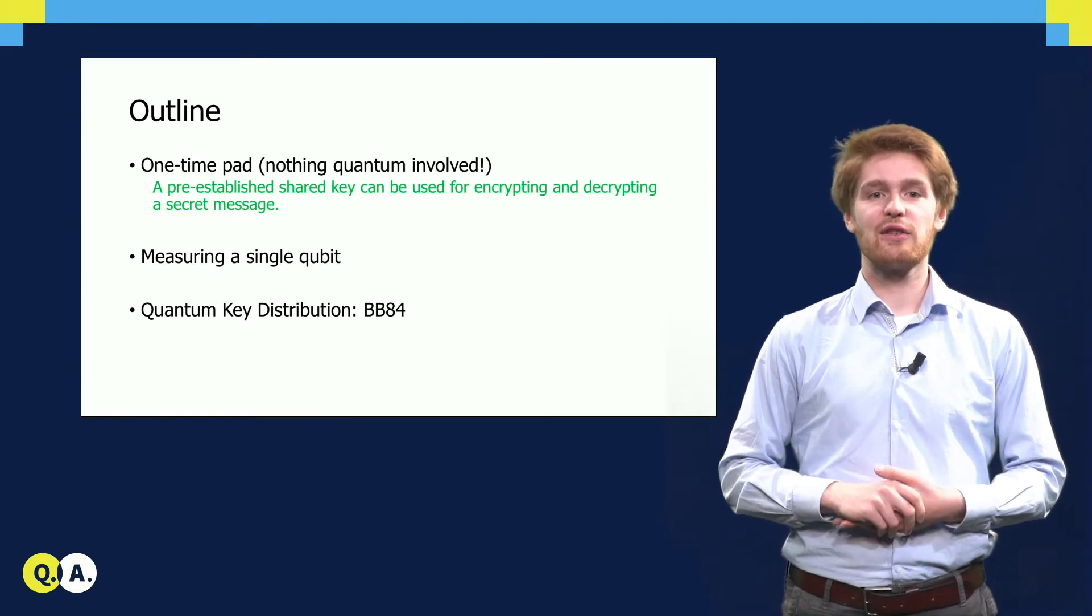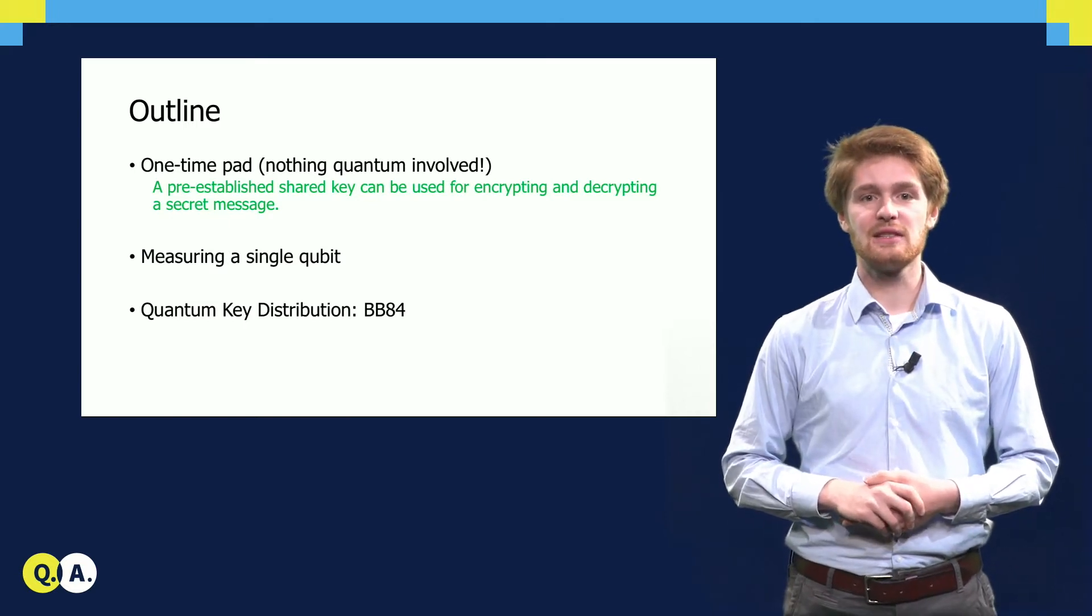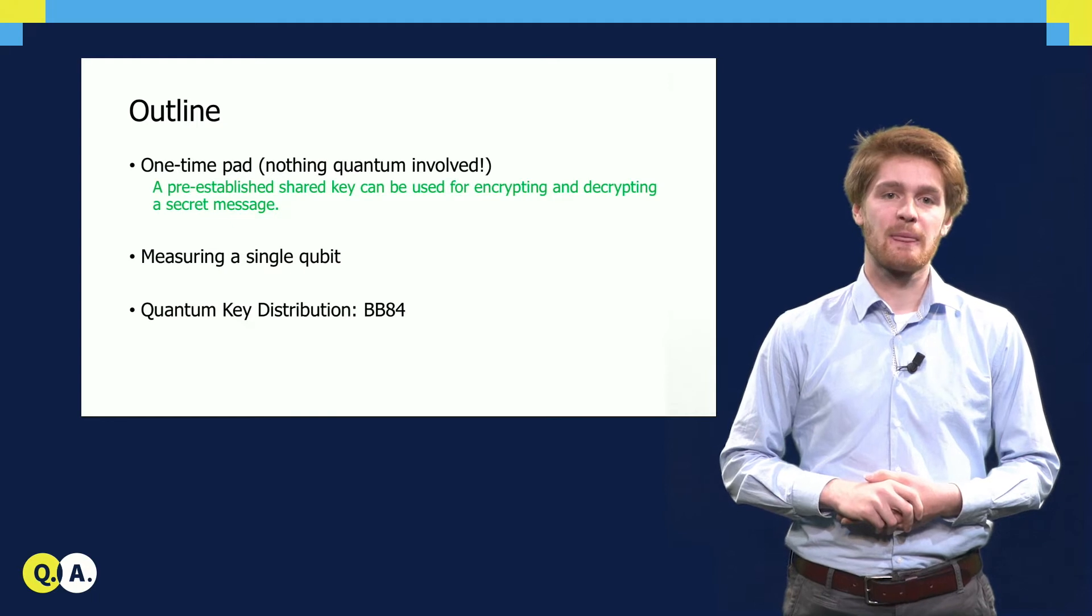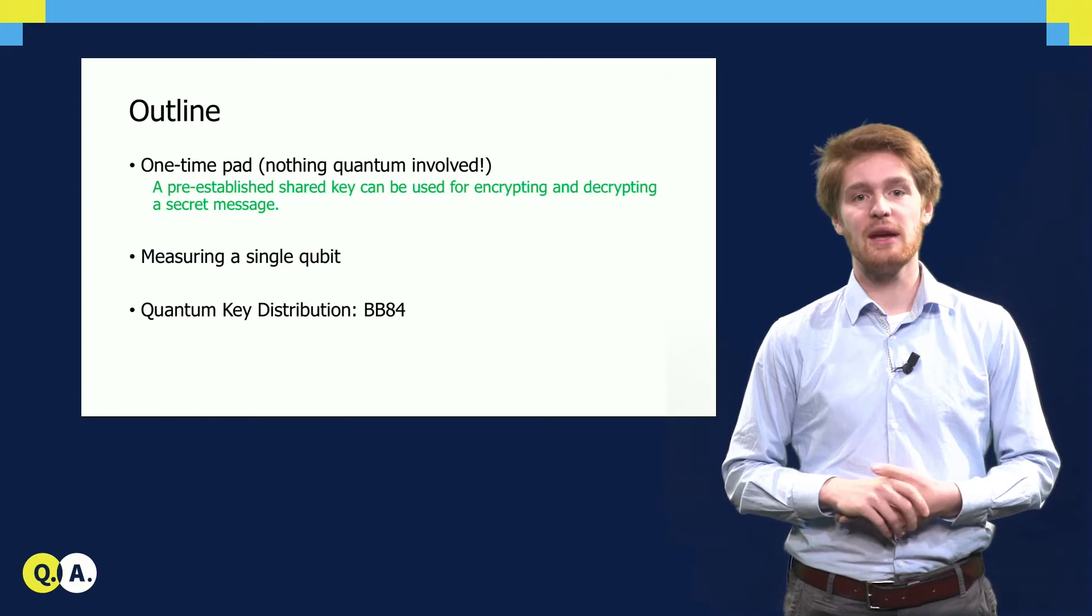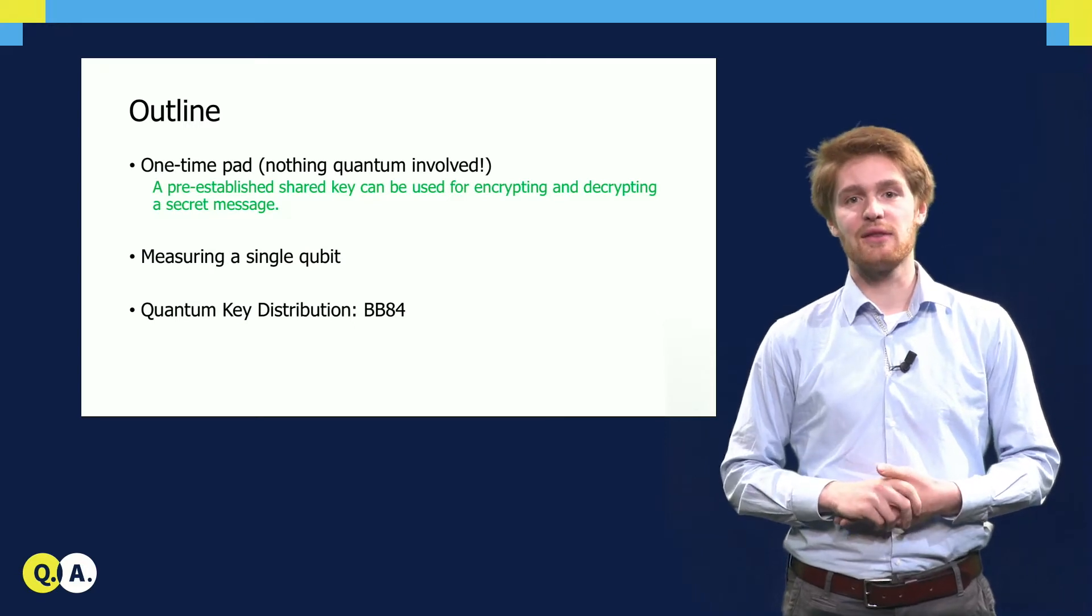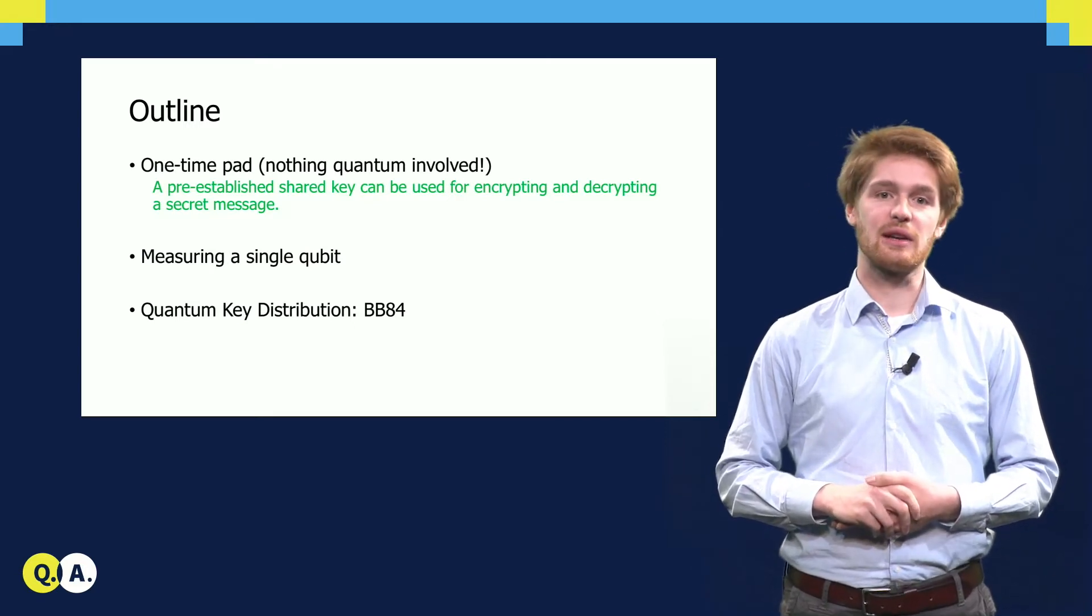We will first give an overview of the possible single qubit states and measurements we will use. The second part of the video is devoted to explaining a famous quantum key distribution scheme called BB84, named after its inventors Charles Bennett and Gilles Brassard.